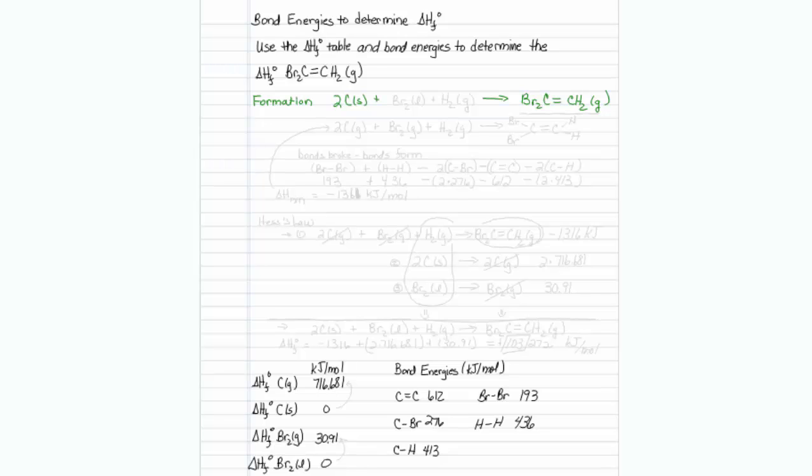I will also need some bromine, two of them, to make it, and the standard state of bromine is Br2 as a liquid. I will also need some hydrogen. The standard state of hydrogen is H2 as a gas. Now I have a balanced formation reaction.